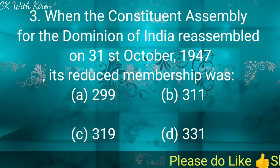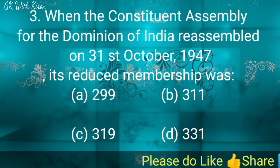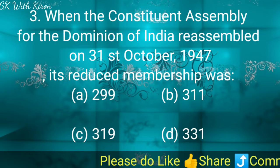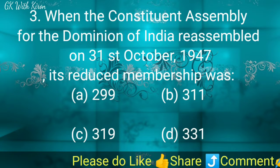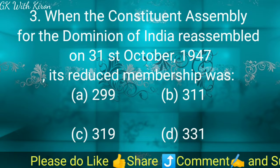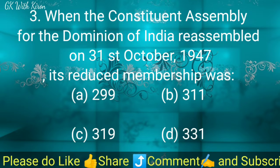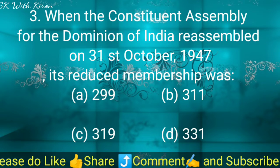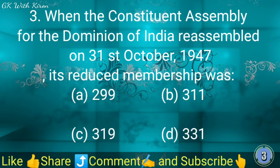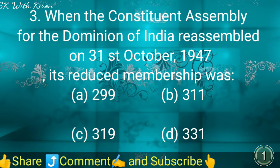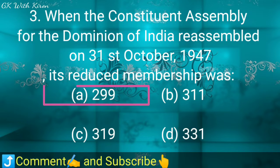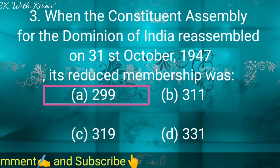Question three: When the Constituent Assembly for the Dominion of India reassembled on 21st October 1947, its reduced membership was — option A: 299, option B: 311, option C: 319, and option D: 331. The correct answer is 299.